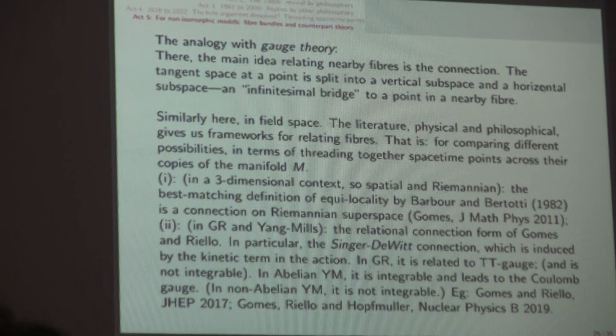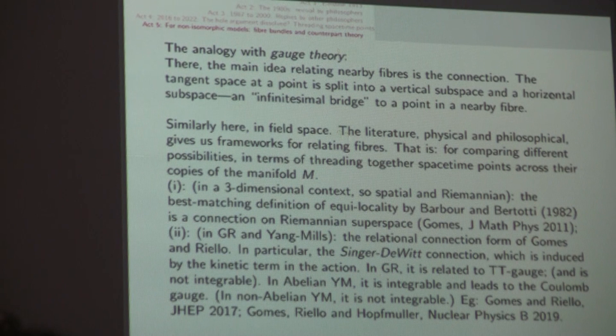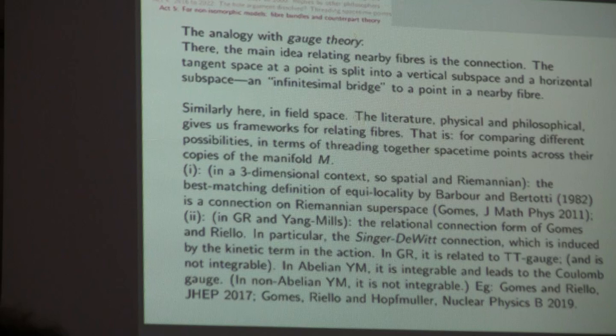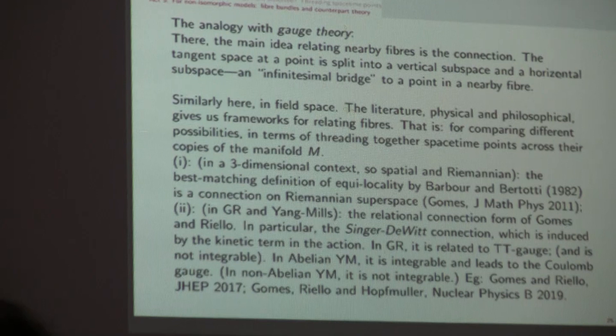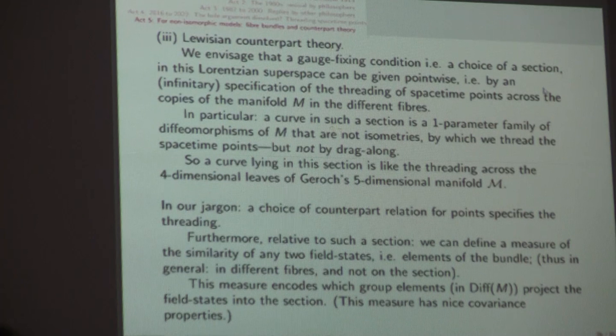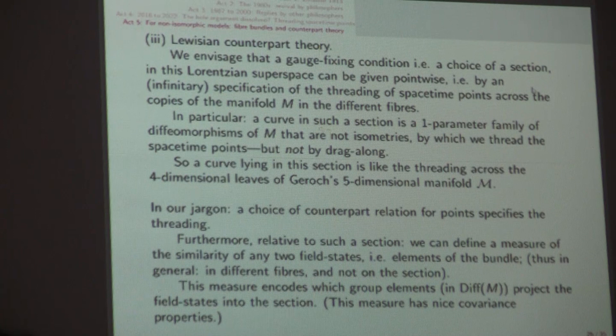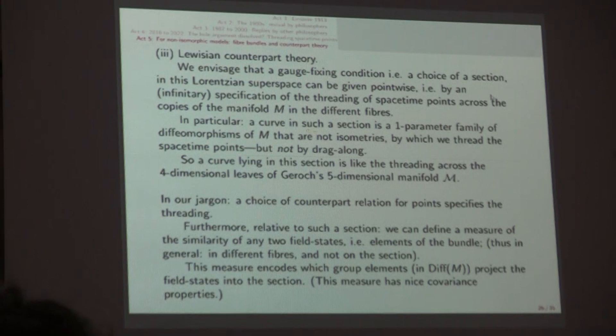But in GR and Yang-Mills, thus on Lorentzian manifolds, Gomes and Riello and also Gomes and Riello and Hopfmuller have a set of papers in which they have a connection on the relevant field space. In particular, they focus on what they call the Singer-DeWitt connection. And in GR it's been studied in detail. In Abelian Yang-Mills, it's integrable and actually leads to the Coulomb gauge. So it's an integrable connection. It therefore specifies sections and it leads to gauge fixing with the Coulomb gauge. And final slide, Lewisian counterpart theory.